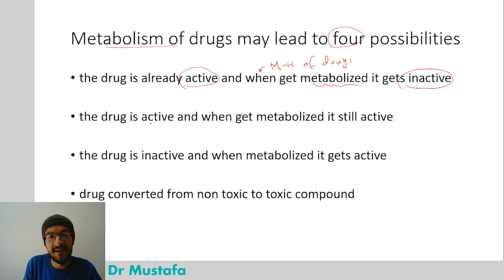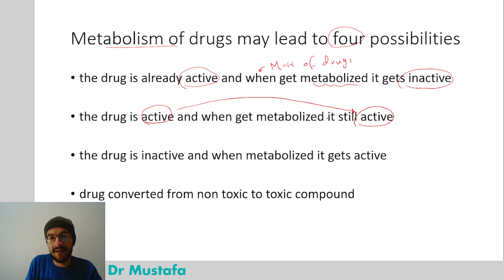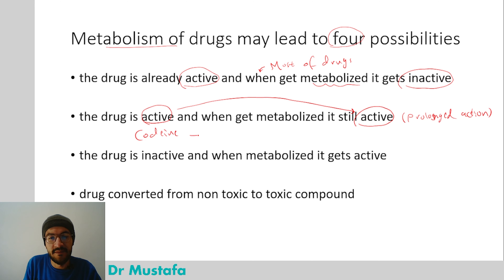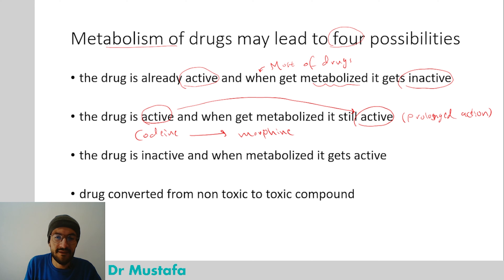The second possibility is that the drug is active and when it gets metabolized it remains active, which gives the drug a prolonged action. An example is codeine, which is an opioid painkiller that is metabolized into morphine — also an active painkiller with even stronger action than codeine.